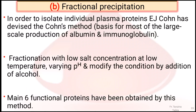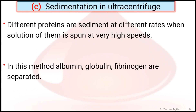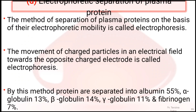By the fractional precipitation method, six functional proteins are obtained. In sedimentation by ultracentrifuge, different proteins sediment at different rates — albumin, globulin, and fibrinogen are separated this way. In electrophoretic separation, plasma proteins are separated on the basis of electrophoretic mobility — the movement of charged particles in an electrical field toward the opposite charge electrode, which is called electrophoresis.